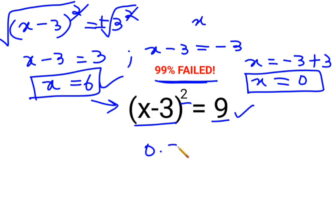And 0-3, the whole square, is basically (-3)², correct? The square of a negative number also gets you the positive value. So here we can say the value of x equals 6 or x equals 0 is absolutely correct for this particular question.